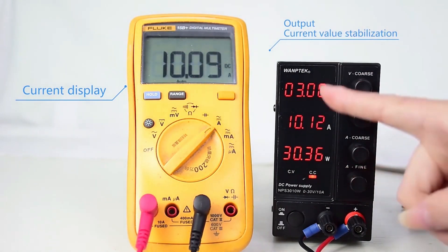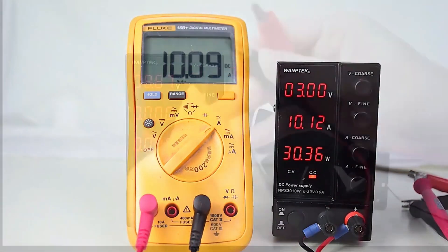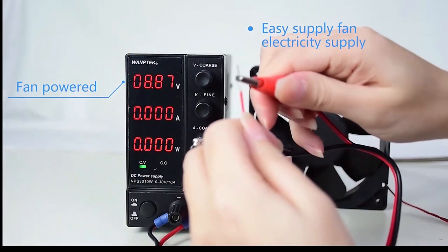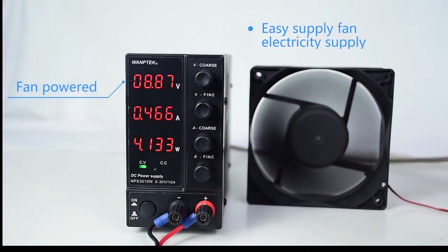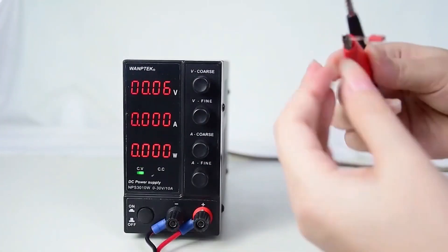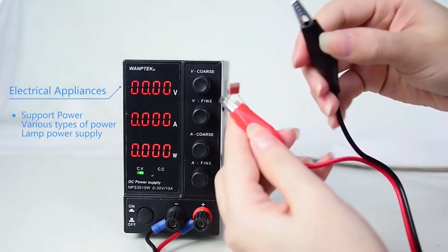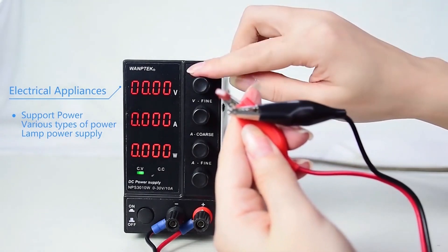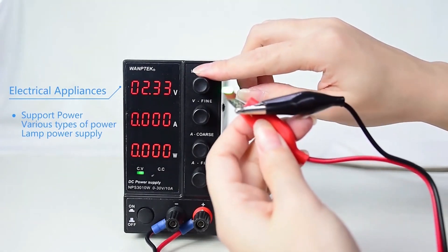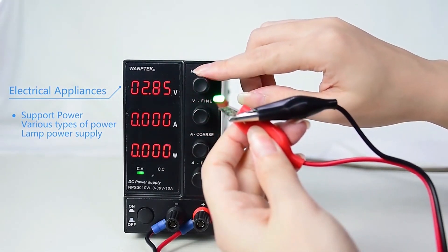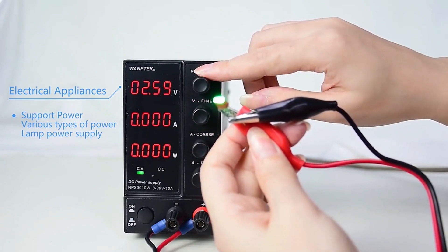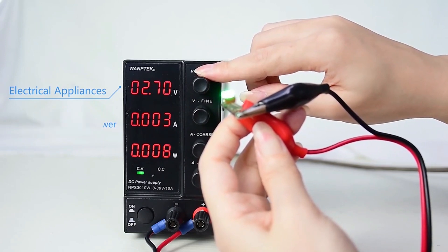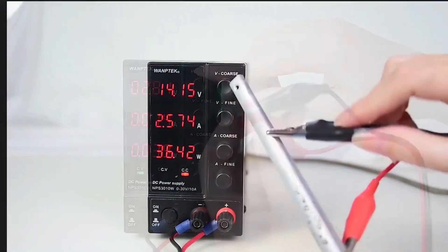It also minimizes ripple voltage and current stability, ensuring clean and stable power delivery. The 0.4-inch red 3-digit display allows for quick adjustments and accurate readings, enhancing user experience. The NPS 306 supports both AC 230V and AC 115V input voltages, allowing for versatile use in different regions without additional adapters or converters.